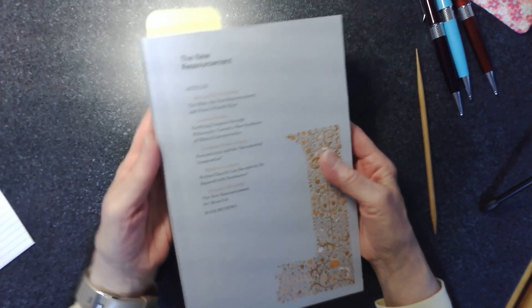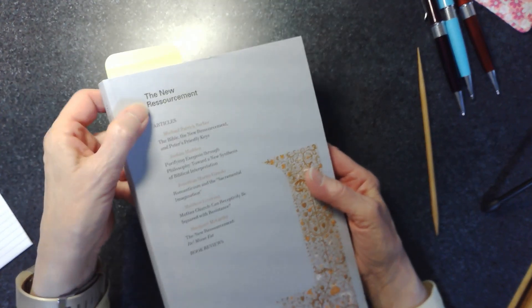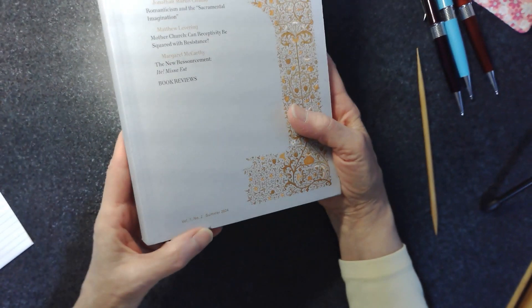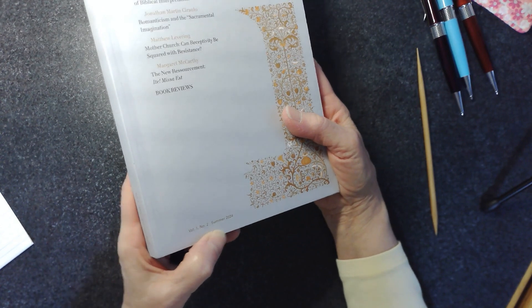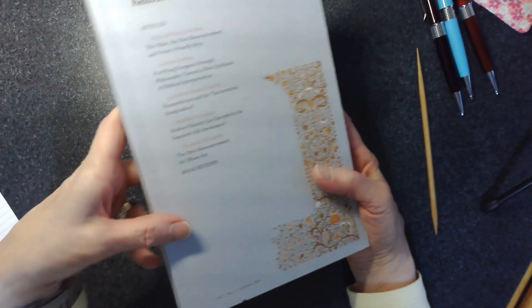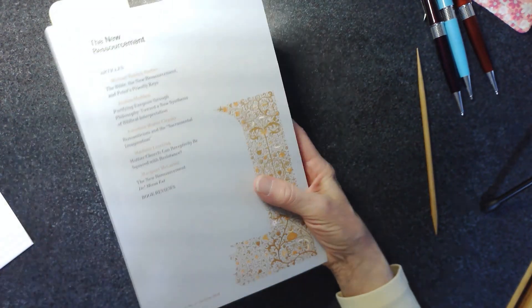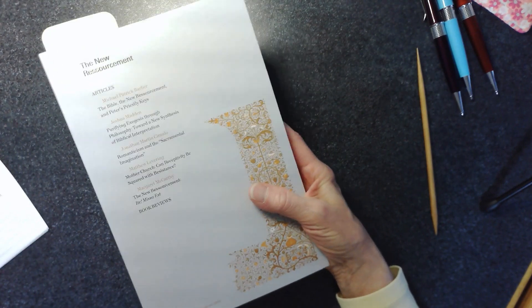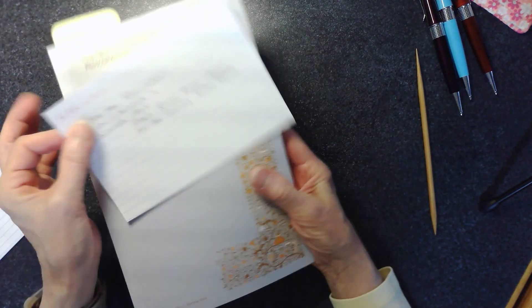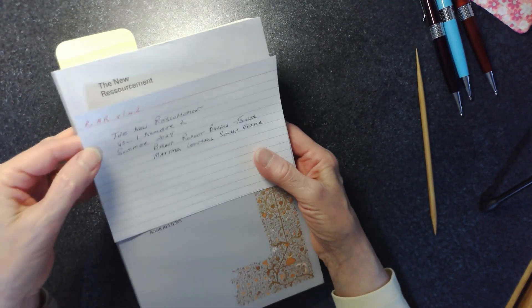Okay, here is the journal in question. It's called The New Resourcement. The issue is volume one, number two, summer of 2024. And the articles are listed on the front of the journal. So the first thing that I'm going to do is I'm going to make a bib card for the journal as a whole.